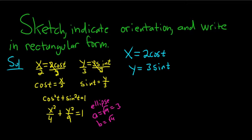Because the bigger number is under the y, you see the bigger number is under the y, the major axis is vertical.